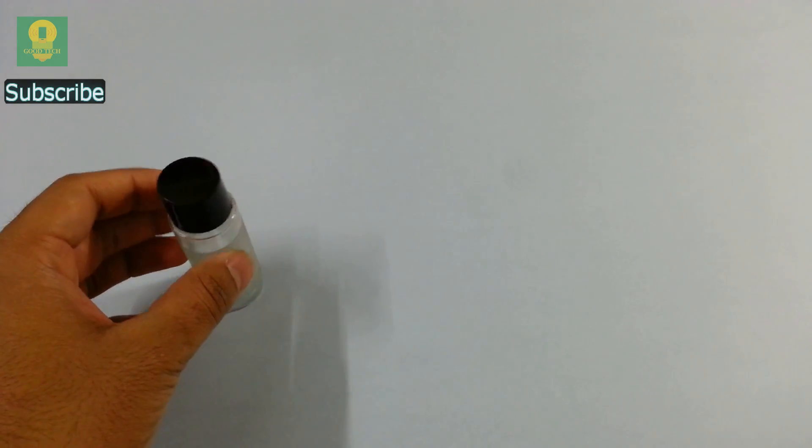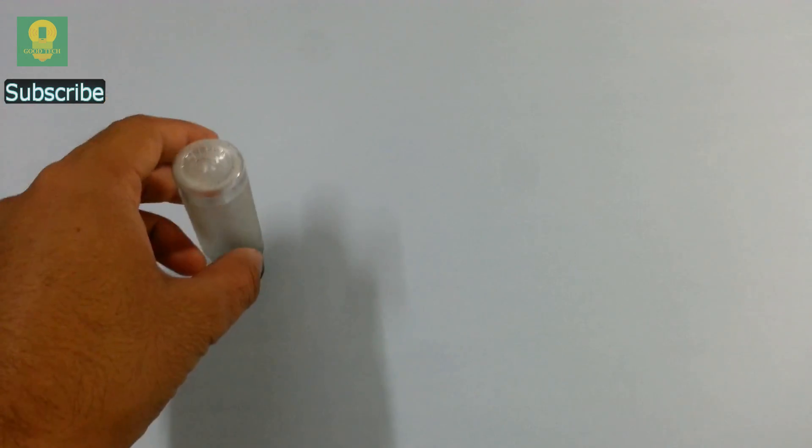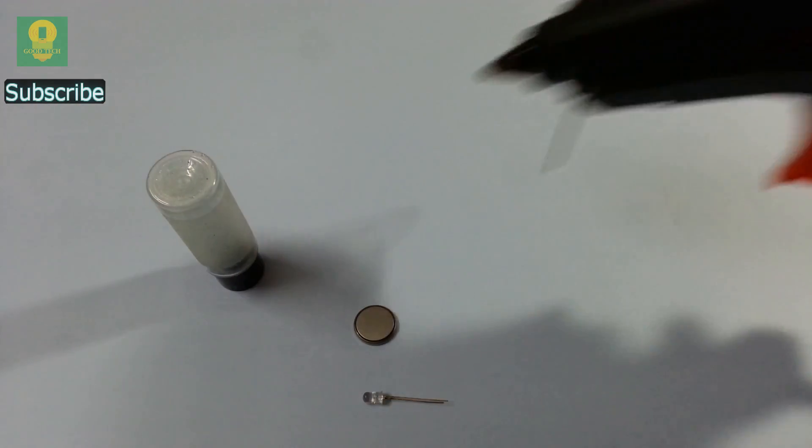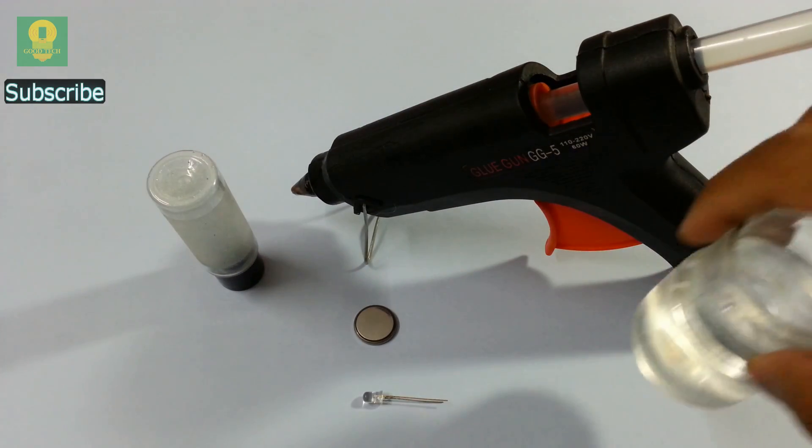The items required to make the water lamp are: a waste plastic or glass bottle - any bottle can be used if it can stand still even when placed inverted, a multicolor LED, a coin cell battery, hot glue gun, and a cup of clean water.